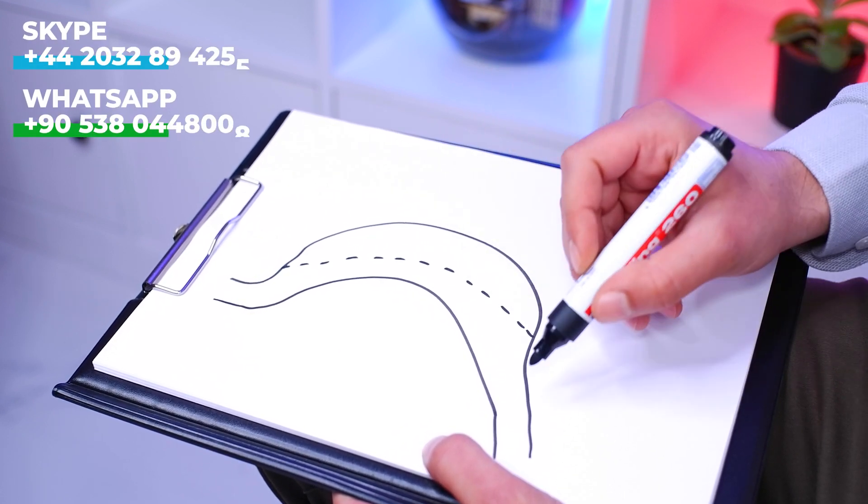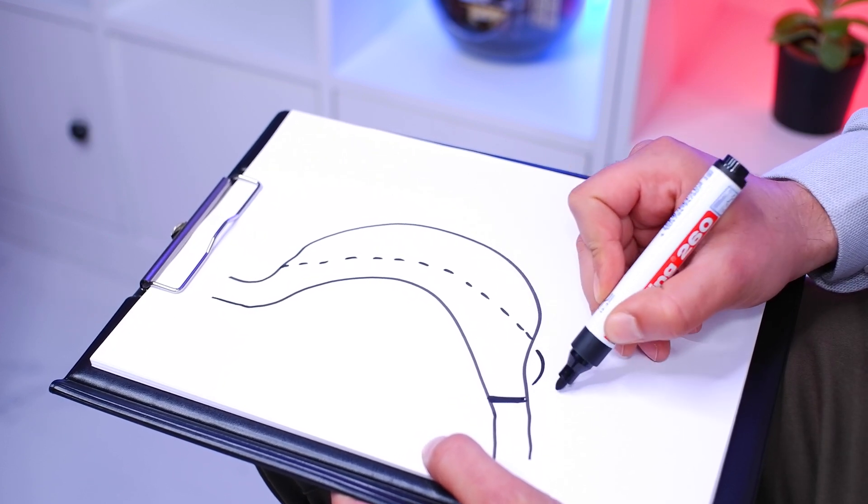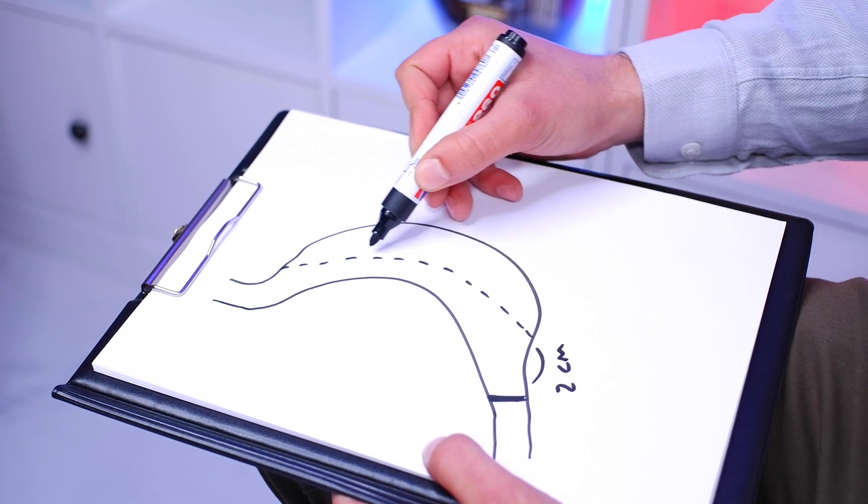This is our stapler line. Here is pylorus to end of the stomach. Here is two centimeters. We are cutting here.